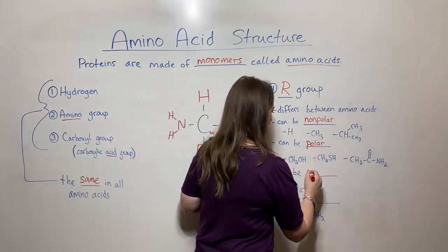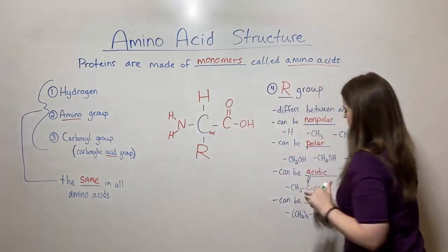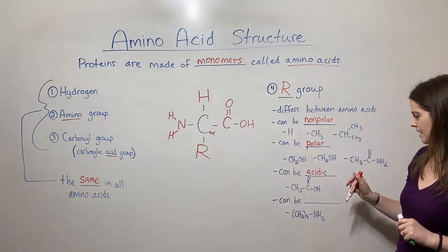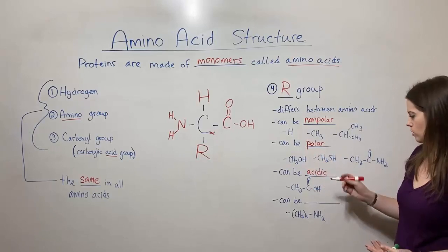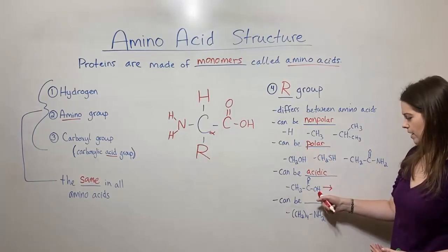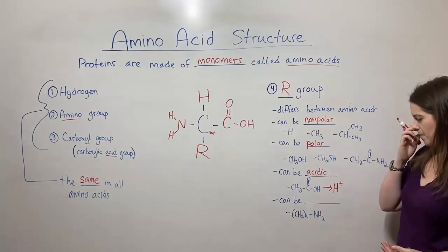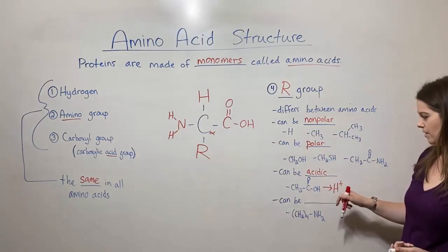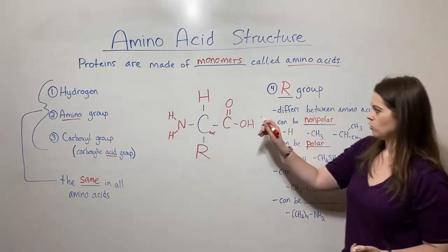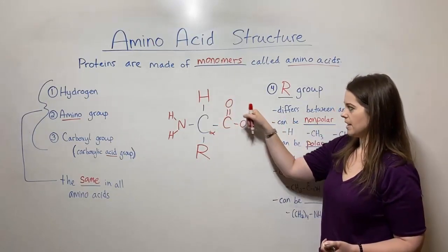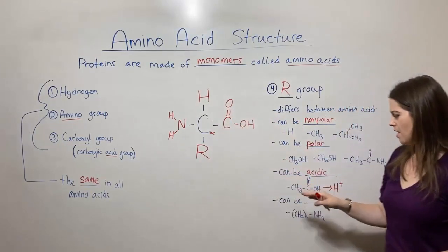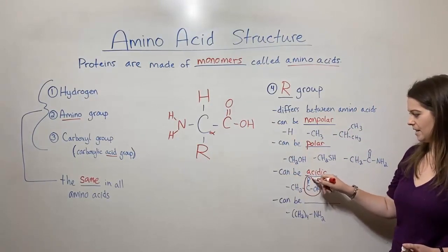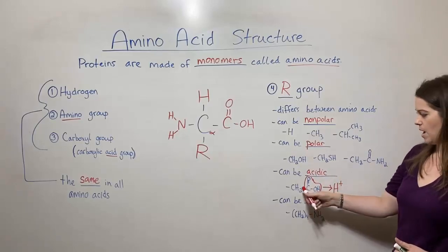They can also be acidic. So right here I have aspartate also known as aspartic acid. This is the R group that you would see in this position for that amino acid and the reason it's acidic is because when you drop that into a solution of water this H plus right here can come off and we know that any compound that increases the concentration of hydrogen ions in a solution is an acid.